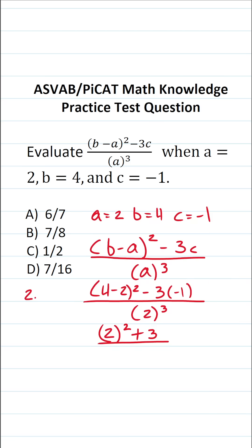2 to the third is the same thing as 2 multiplied by itself 3 times. So that's going to be 2 times 2, which is 4, times 2, which is 8. So 2 to the third is 8.